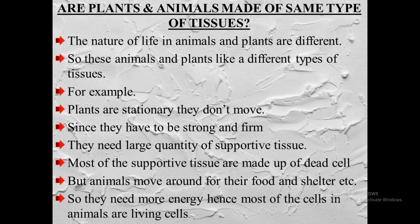Plants and animals have different types of requirements. For example, plants are stationary — they don't move from one place to another. To stand in an erect or upright position, plants need large quantities of supportive tissue, and most of this supportive tissue is made up of dead cells. Whereas animals are not stationary — they need to move for food or shelter, so they need a lot of energy, and hence most cells in animals are living cells.